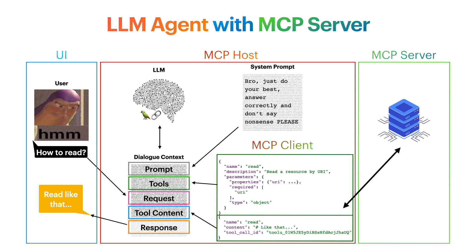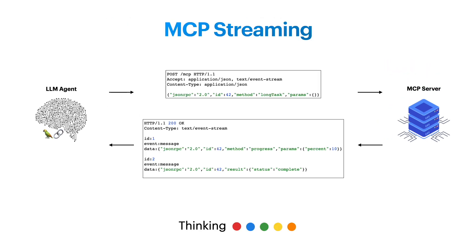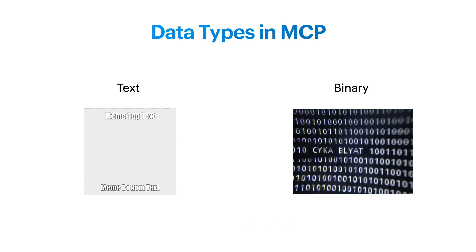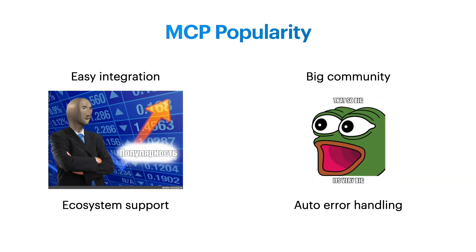The MCP host sends the resulting context to the LLM to process, and the model responds with a plain text answer. The protocol also allows not just sending a single request and getting a response, but getting a complete stream of messages if the task takes a long time — enabling a 'thinking' effect in the UI. Additionally, the protocol supports sending both text and binary data, meaning it can process pictures, documents, videos, and so on. MCP gained its popularity because of easy integration, a big supportive community, and automatic error handling.